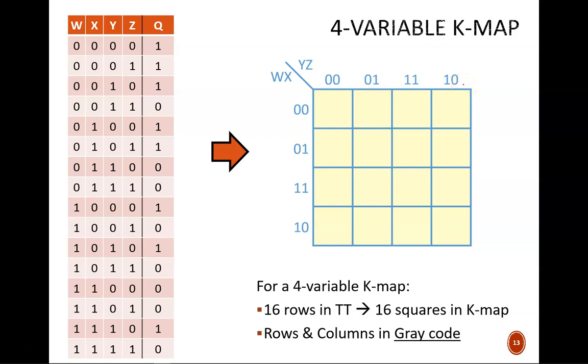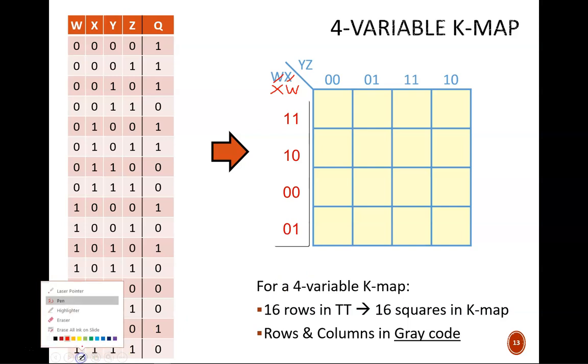We actually could alter this pattern. For example, we could swap the order of X and W, but that makes it tougher to connect to the truth table. We could also rearrange the input bit codes. For instance, we could go 11, 10, 00, 01. As long as only one bit changes between each adjacent square, the K-map strategy will hold. But, we'll find our work much less error-prone if we stick with the standard format.